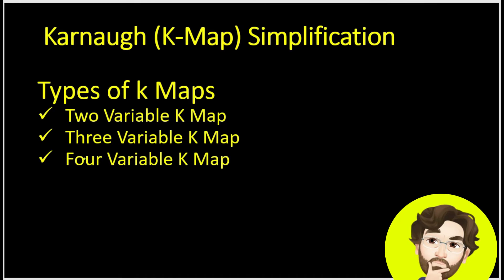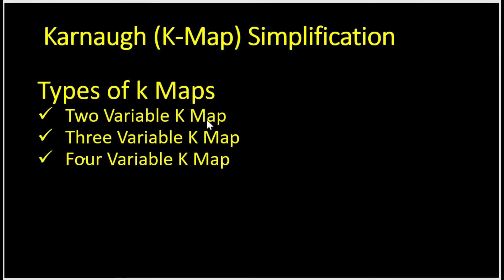Welcome back learners. Today we are going to start with different types of KMaps. We are having 2 variable KMap, 3 variable KMap and 4 variable KMap. So one by one I am going to show you how to create these types of maps. We will be starting with 2 variable KMap and I will make you understand how the map has been created.